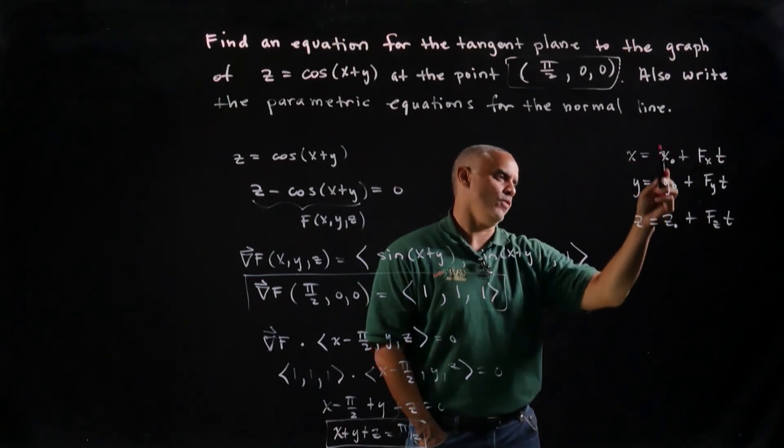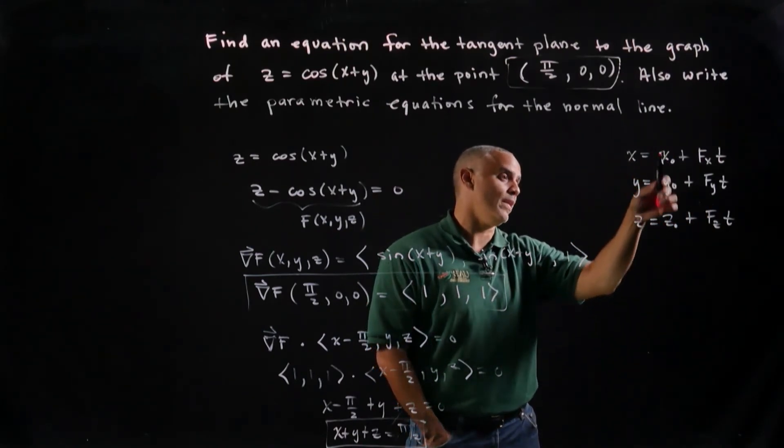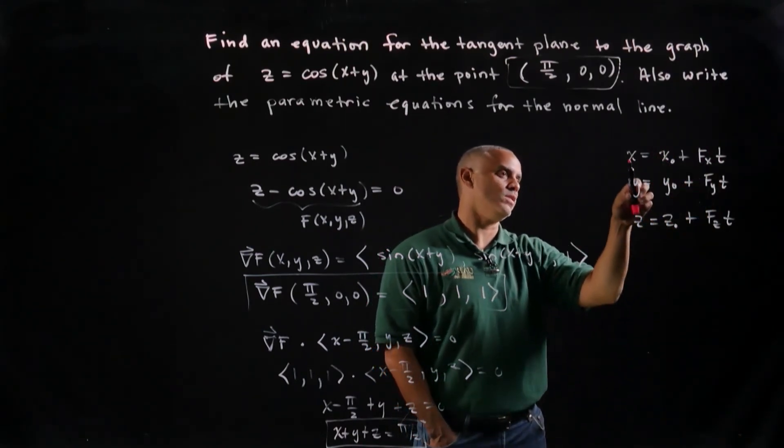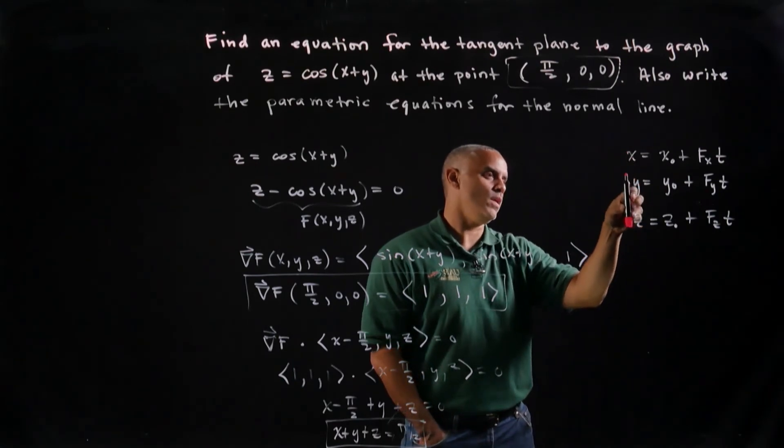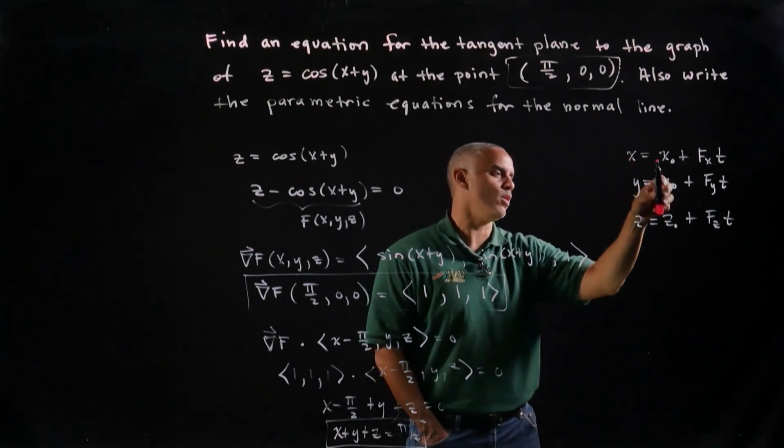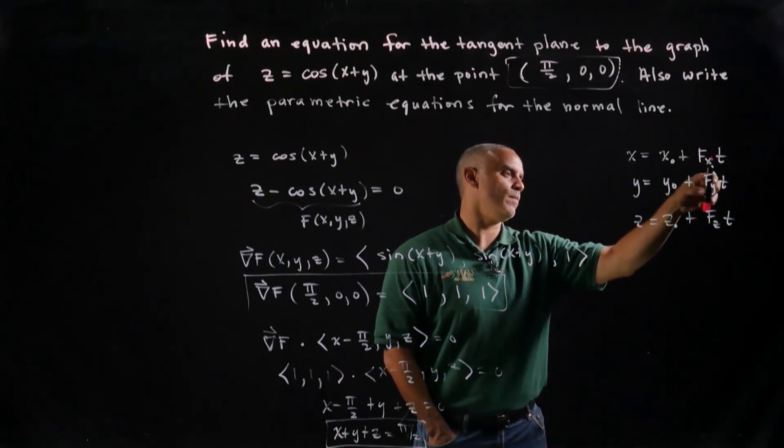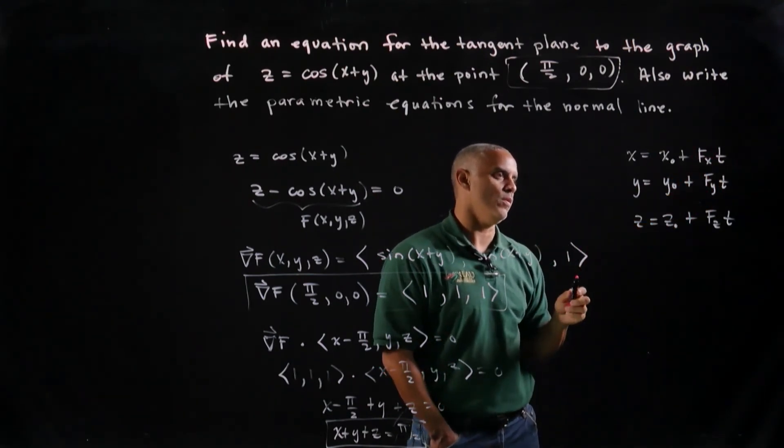And a quick dimensional analysis, if you get confused as to whether or not your x naught, y naught, z naught should be here or here, you could see x, y, and z are length parameters. So a length parameter equals a length parameter plus a rate times time, which is another length parameter.